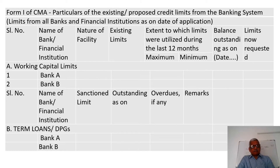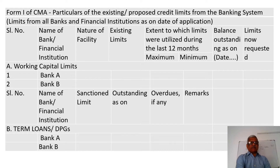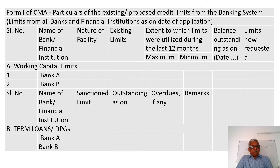CMA Form No. 1 gives the particulars of the existing and proposed credit limits from the banking system. If you look at it, you have the working capital limits from various banks — the name of the bank, nature of facility, existing limits, extent to which the limits were utilized during the last 12 months, balance outstanding as on date, and the limit now requested.